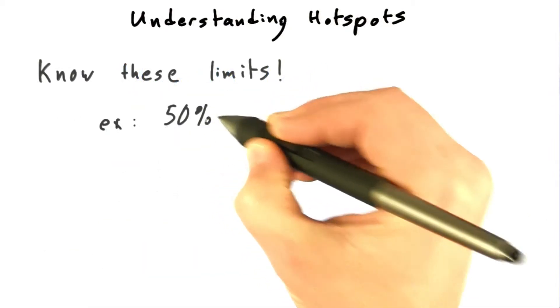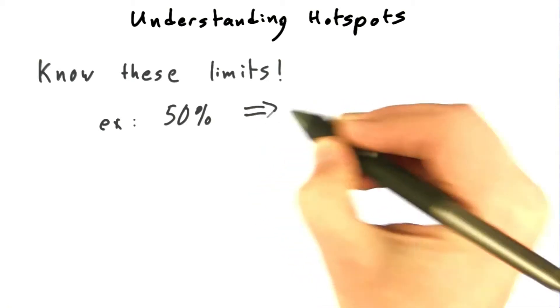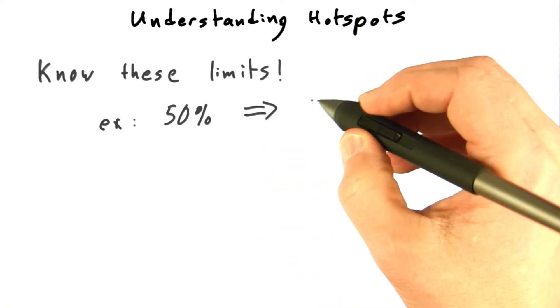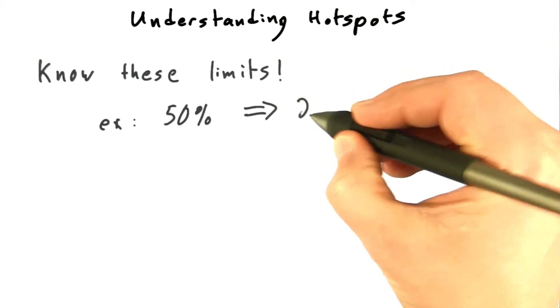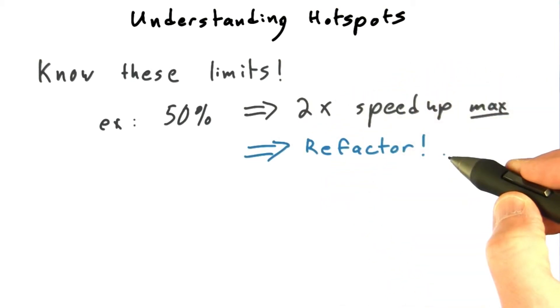So it's really important that you know these limits. For example, if your application spends 50% of its time on I/O, just reading and writing to the disk, then that implies that you can't possibly do better than a 2x speedup, unless you can come up with a way to refactor the computation.